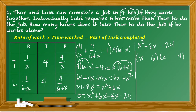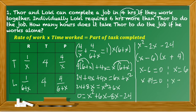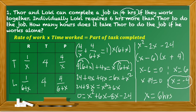Factoring gives (x − 6)(x + 4) = 0, so x = 6 or x = −4. Since we are looking for a time value, we discard the negative answer. Therefore x = 6, meaning Thor takes 6 hours to do the job working alone. That is our answer for problem number one.